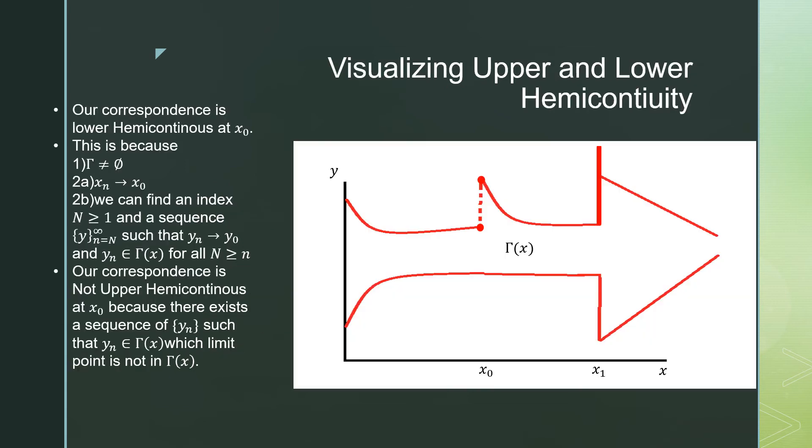In terms of visualizing upper and lower hemicontinuity, it's best to talk about it around different points. We can say that our correspondence is lower hemicontinuous at x_0. This is because our correspondence is non-empty and x_n is defined as it approaches x_0, meaning that we can take an infinite sequence approaching x_0 from both sides and x_0 will be there.